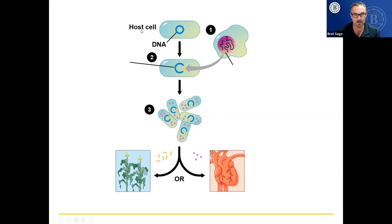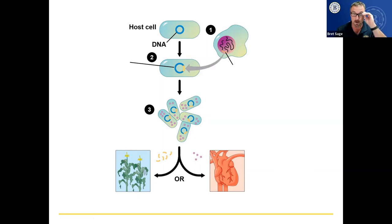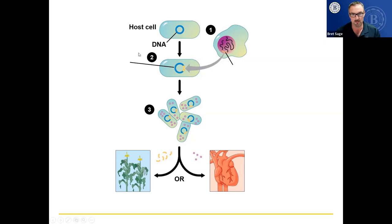We're starting with a host cell — this is a bacterium. Notice the kind of hot dog shape; this is something like E. coli or a similar rod-shaped bacteria. The DNA inside is different from ours because it's circular. Bacteria have circular chromosomes rather than linear ones like us.